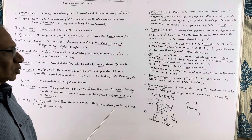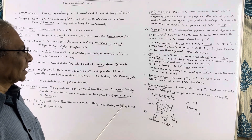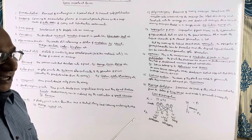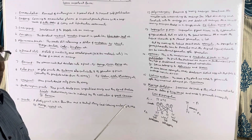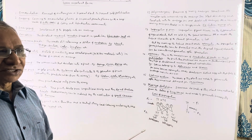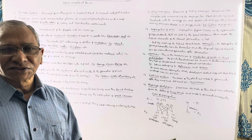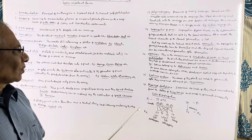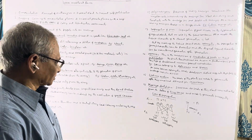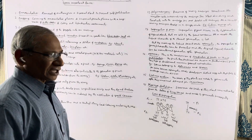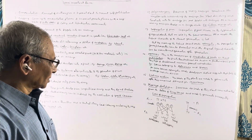Segregation of genes: you have studied about Mendel's laws. In Mendel's first law, also known as segregation of genes, in the F2 generation the genes segregate. Farmers purchase hybrid seeds for cultivation, but the seeds produced from the crops raised by farmers are unsuitable for further cultivation. This is because of segregation of genes.